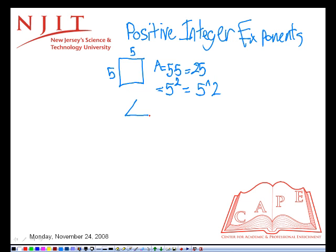As another example, a cube of side length 5 has a volume of 5 times 5 times 5, which is 125.